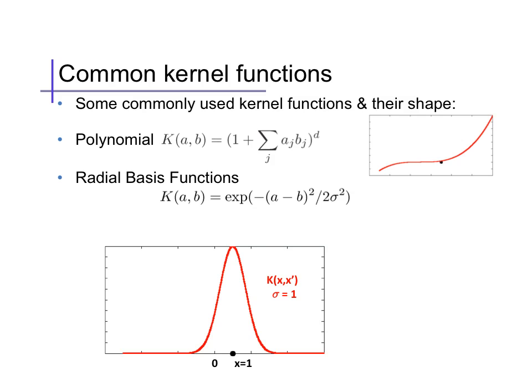Perhaps the most common kernel function is the radial basis function, or Gaussian similarity kernel. This kernel results in high values near the point x, falling off as a Gaussian with some spread, sigma, as we move away from that point.